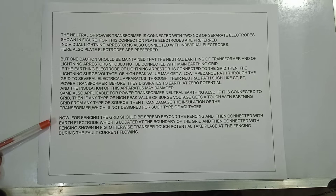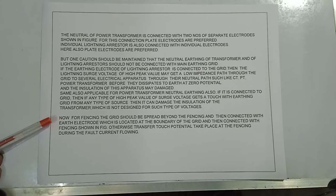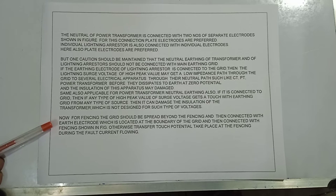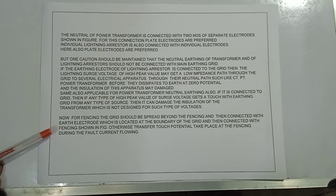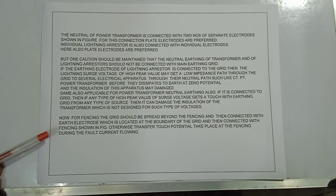For fencing, the grid should be spread beyond the fencing and then connected with the earth electrode located at the boundary of the grid, then connected with the fencing. Otherwise, transfer touch potential will occur at the fencing during fault current flowing.